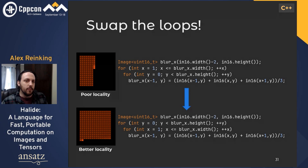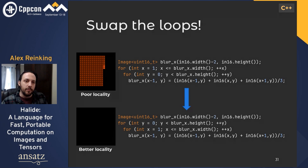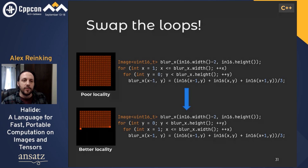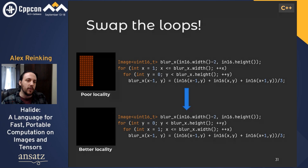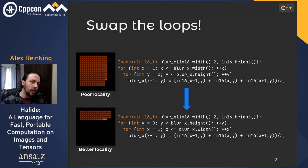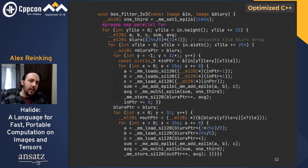If you imagine memory being laid out left to right and top to bottom, you can clearly see the issue with the traversal order. This is one of the few times you can tell something will be slow at a glance, since it never accesses memory in a nice local way.